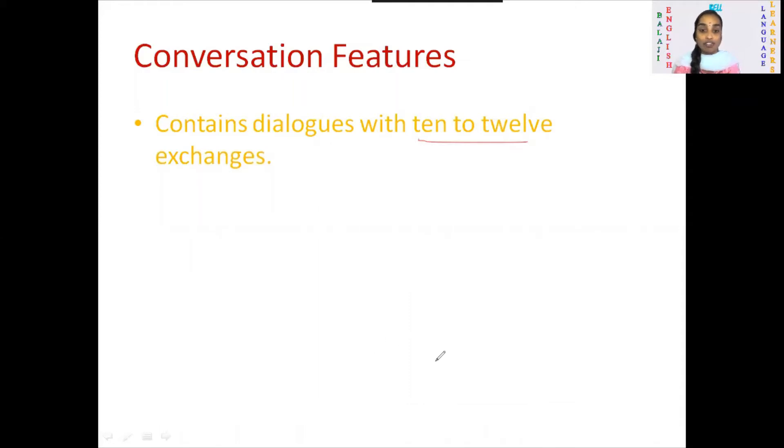Second point which you have to remember: the feature is it should be having a proper sequence of exchanges. You have to arrange it in a proper way. You cannot tell hi, hello, how are you in the last when you're ending the conversation. When you're writing the conversation, the first dialogue should be hi, hello, greeting, introduction part, then the context, then the end conclusion.